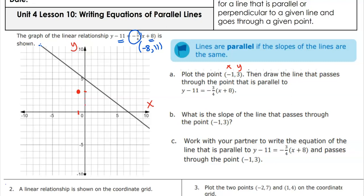What slope am I going to give it? I'm going to go down 3 and over 4. I can also go backwards — up and backwards. The slope of the line we just drew is negative 3 over 4. Good.